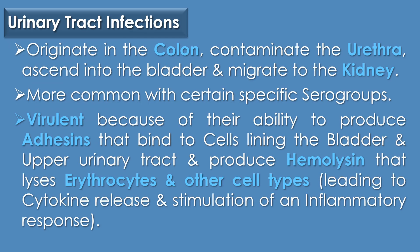The second clinical disease caused by E. coli is urinary tract infections. Most gram-negative rods that produce UTIs originate in the colon and contaminate the urethra, then into the bladder, and may migrate to the kidney. Most strains of E. coli can produce urinary tract infection. E. coli are particularly virulent because of their ability to produce adhesins that bind to the cell linings of the bladder and upper urinary tract, and produce hemolysins that lyse erythrocytes and other cell types, leading to cytokine release and stimulation of an inflammatory response.